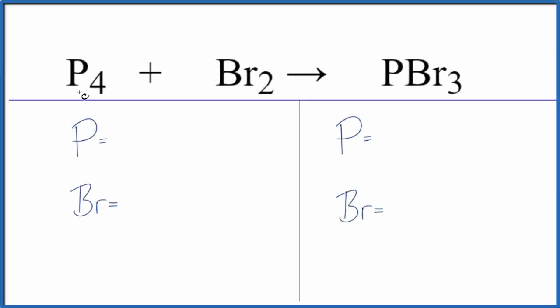In this video, we'll balance the equation P4 plus Br2 yields PBr3. So we have our tetraphosphorus and our bromine gas. They combine in a combination reaction, and we get phosphorous tri-bromide.